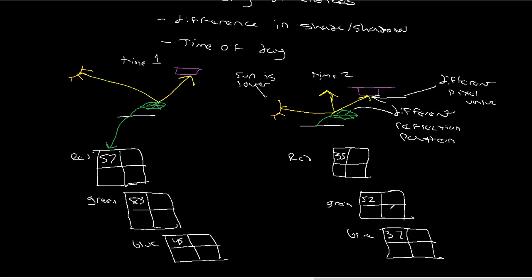This is image variance — the same pixel at two different times having the same surface feature but drastically different pixel values, simply because of things that have nothing to do with actual change. In this example it was viewing geometry and time of day, but you can imagine processing differences, or maybe a tree had grown up shading the area. You can imagine all kinds of scenarios that would lead to this sort of result. Hopefully this makes sense, and as always, if you have any questions please reach out. Thank you.